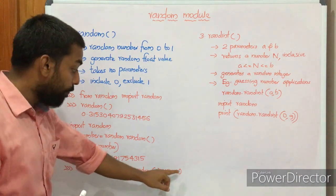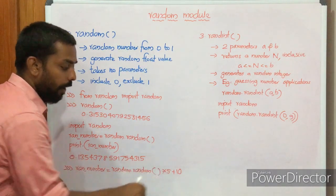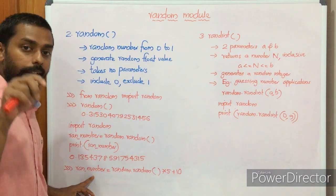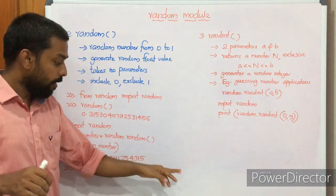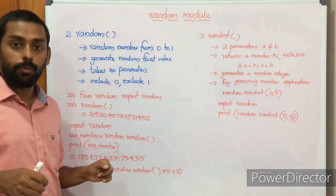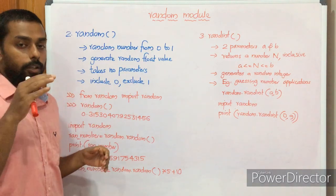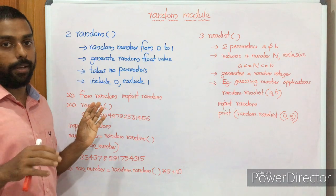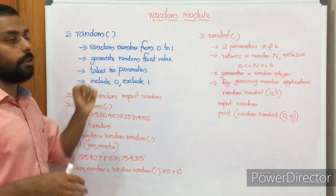We can also write ran_number = random.random() * 5 + 10. The minimum value occurs when random() returns 0: 0 * 5 + 10 = 10. The maximum value occurs when random() approaches 1: 1 * 5 + 10 = 15. So the result will be in the range 10 to 15. Since 0 is included but 1 is excluded, the range is [10, 15). This is how the random function works.